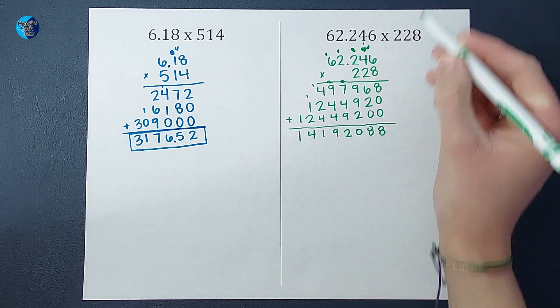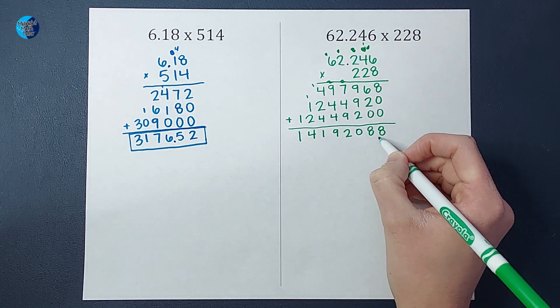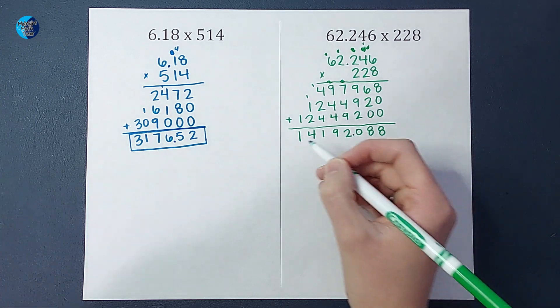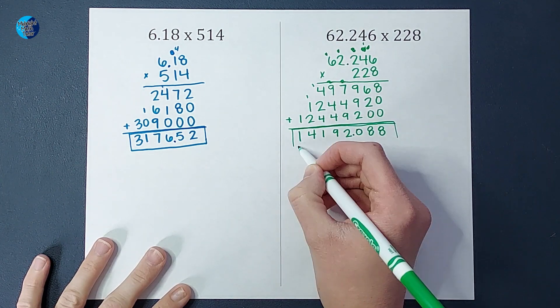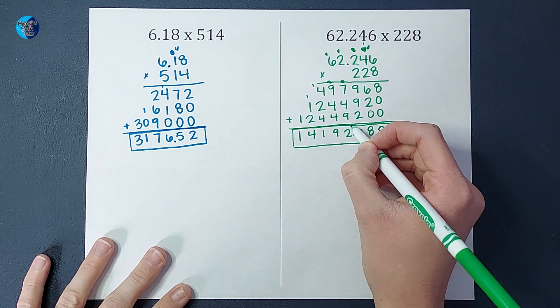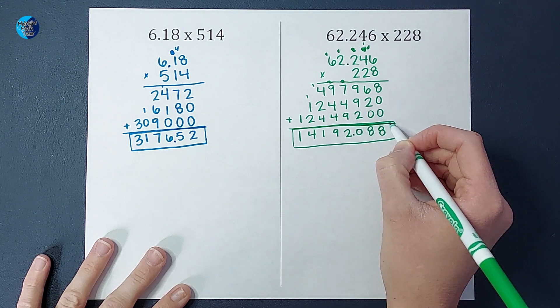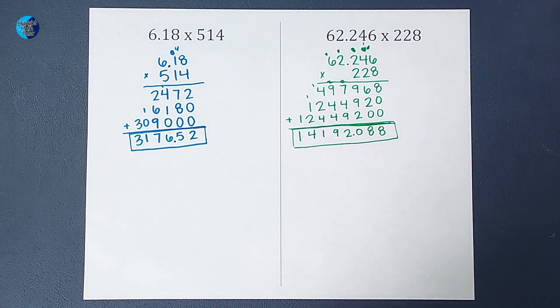One, two, three. So in my answer, I want three behind the decimal. So I end up with the answer 14,192.088.